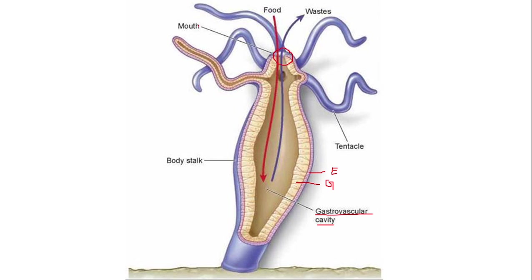One interesting thing about hydra is that there is a single opening, which is only the mouth. If hydra has to eat food and ingest it, it does so through the mouth. During ejection, the undigested waste is also expelled from the body through this same common opening called the mouth. So this single opening serves both ingestion and ejection.